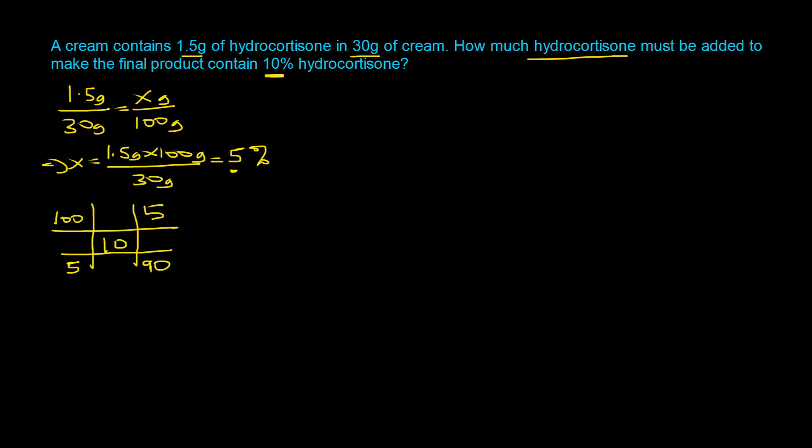For this question, we've determined the number of parts of the 5% and the 100%. From the question, we know the quantity of the 5% is 30 grams, which means the 90 parts represents 30 grams. We can set up a ratio: 90 parts goes with 30 grams, so if you have 5 parts, what would be the quantity? We solve for Y, which equals 5 times 30 grams divided by 90, and that equals 1.67 grams. So the actual amount of hydrocortisone which needs to be added is 1.67 grams.